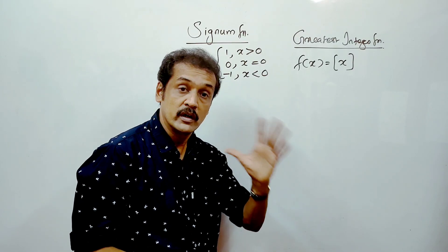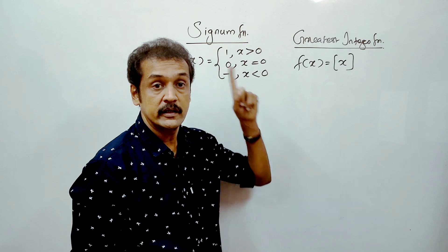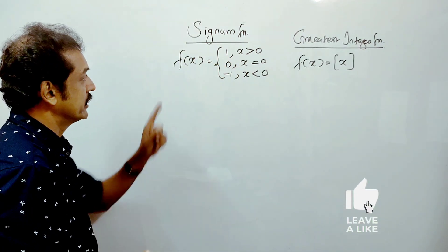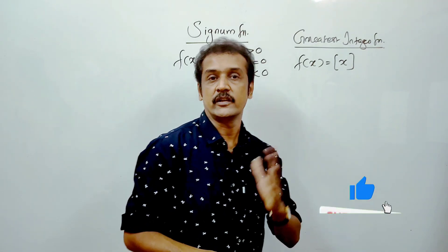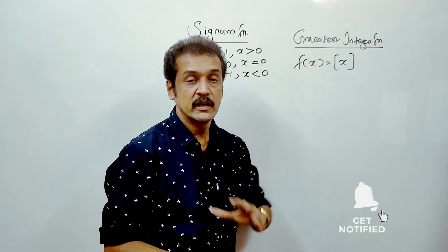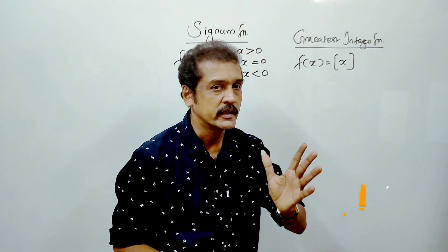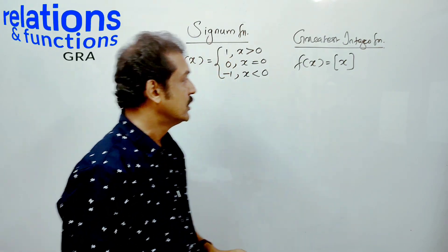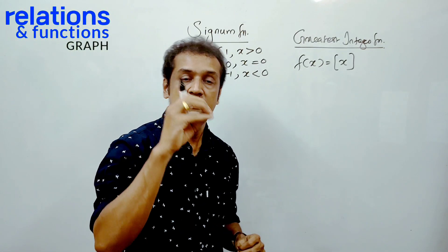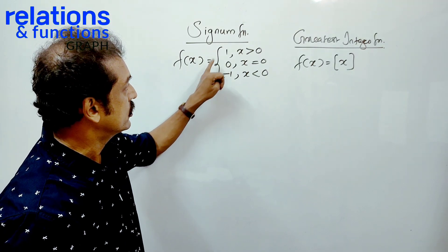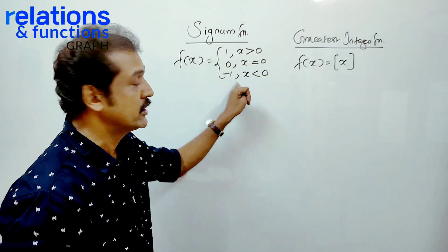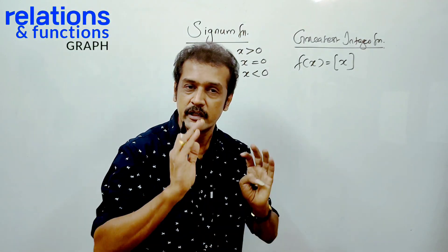The two functions are very important — the signum function and the greatest integer function. The signum function is defined as f of x equals 1 when x is greater than 0, equals 0 when x is equal to 0, and equals minus 1 when x is less than 0. This is the definition.